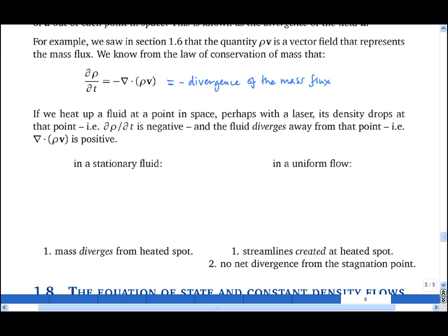For example, if we heat up fluid at a point in space, its density drops, i.e. ∂ρ/∂t is negative, and the fluid diverges away from that point. So let's draw the streamlines heating up that point in space. The streamlines look something like this, diverging away from that point in space.